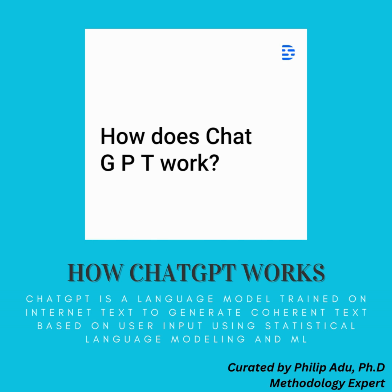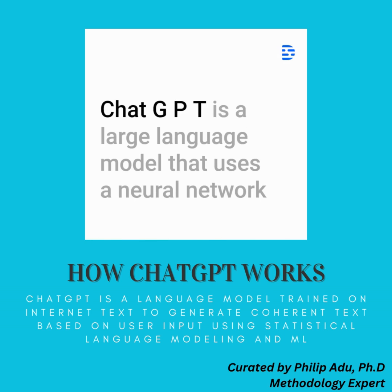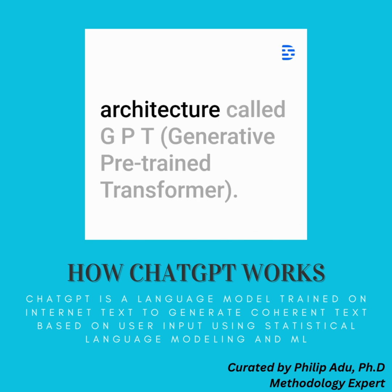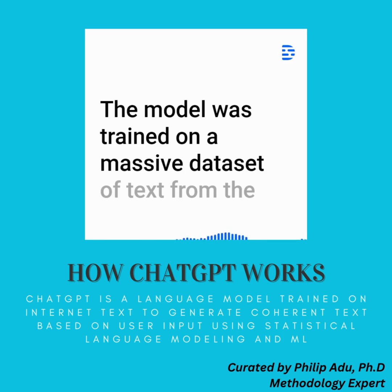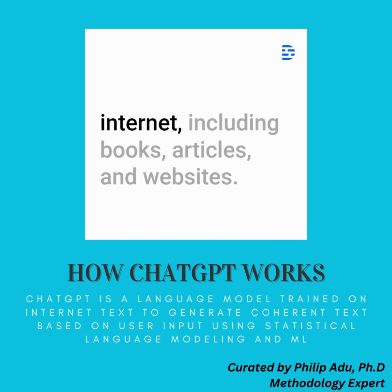How does ChatGPT work? ChatGPT is a large language model that uses a neural network architecture called GPT. The model was trained on a massive dataset of text from the internet, including books, articles, and websites.